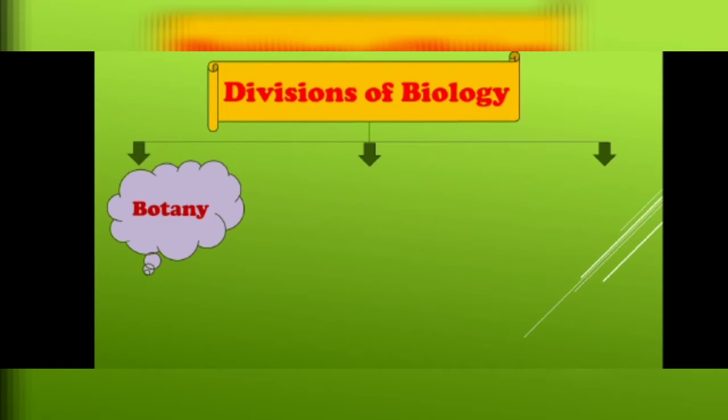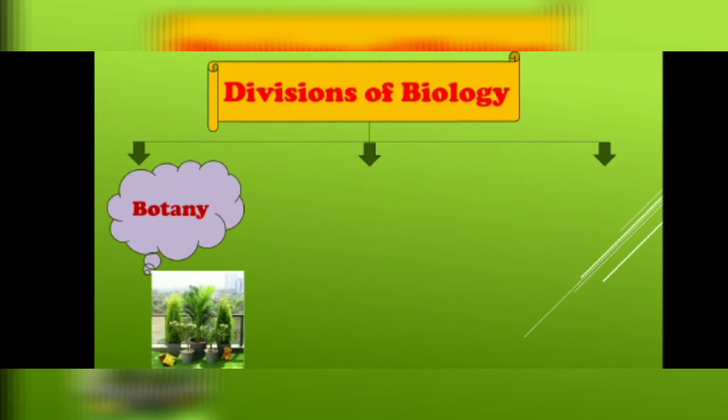Now come towards the divisions of biology. Life exists in different forms on Earth — for example, in the form of animals, plants, or microorganisms. That's why we have divided biology into three major divisions. The first division is botany. We can define botany as the study of plants.